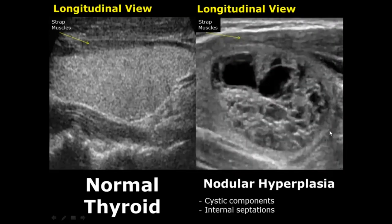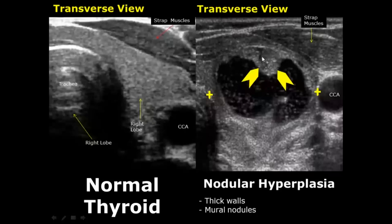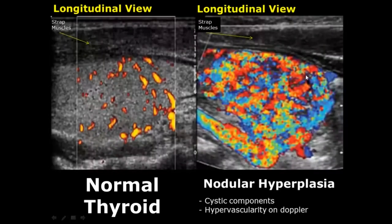Nodular hyperplasia can have many appearances. This image shows internal cystic components and multiple septations. Here is another case of nodular hyperplasia having internal cystic components and a spongy appearance. They can also have thick walls or masses attached to the wall of the nodule. These are called mural nodules. Here is an image showing hypervascularity on color Doppler, another feature of nodular hyperplasia.